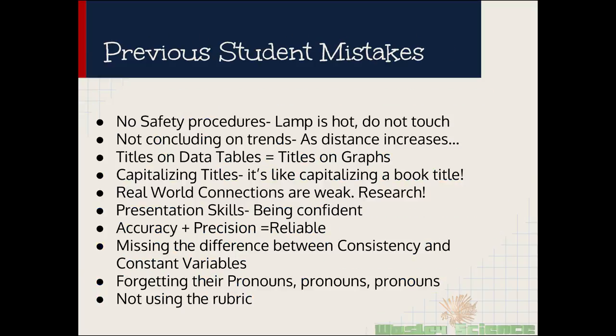We did it guys. We got through the science of science part two. Now you are scientific paper experts. You know how to do this. Things to look at when you have your lab ready to go. Safety procedures. Not actually concluding on the trends. Forgetting their title on the data table and their graph. You gotta capitalize your data table and your graph. It's like a book. Forgetting about the real world connections. Presentation skills of being confident. Your accuracy and precision. That's how you get reliable. Missing the difference between consistency and constant variables and forgetting pronouns. Pronouns, pronouns. Can't have pronouns. And just not using the rubric or even looking at it. Those are things that I've seen kids have trouble with. Use this to help you. So you can get an A plus on your next lab report. All right, guys. Take care.